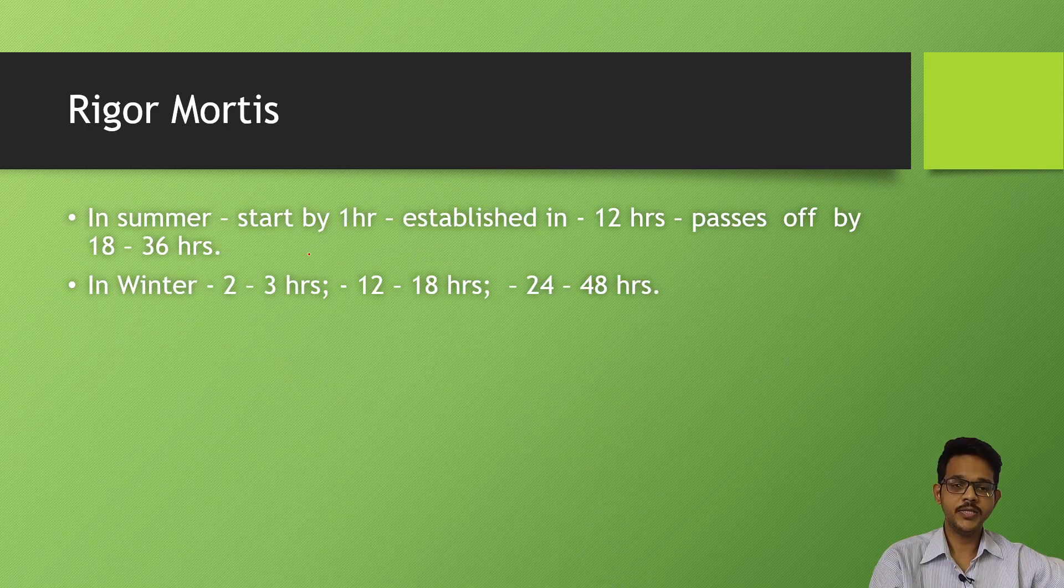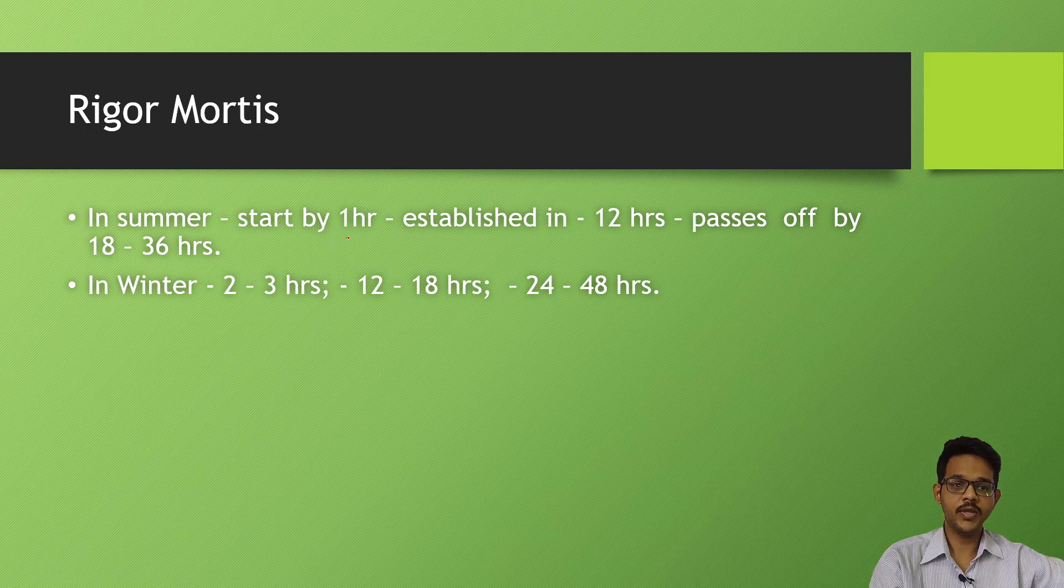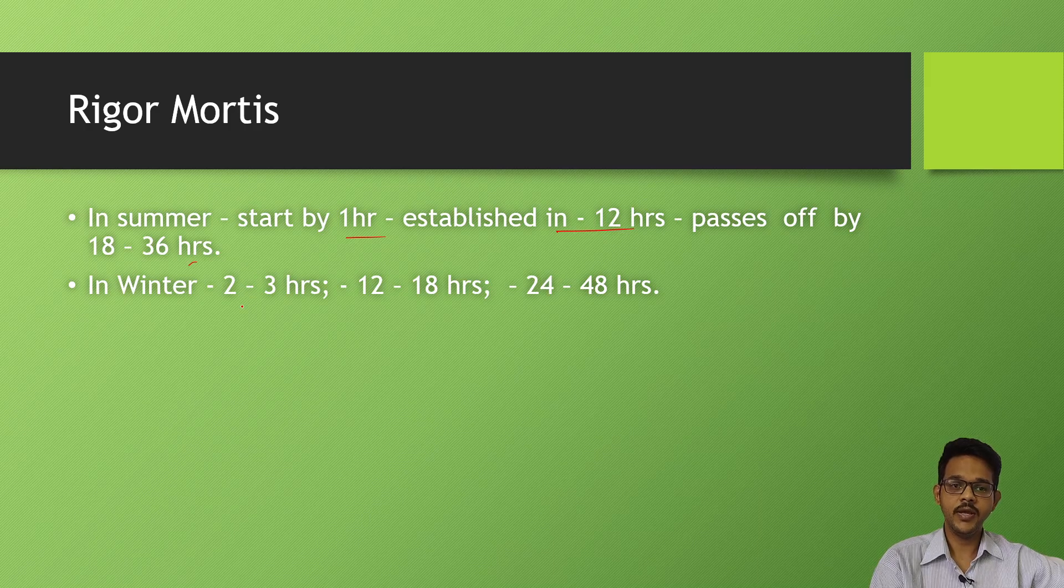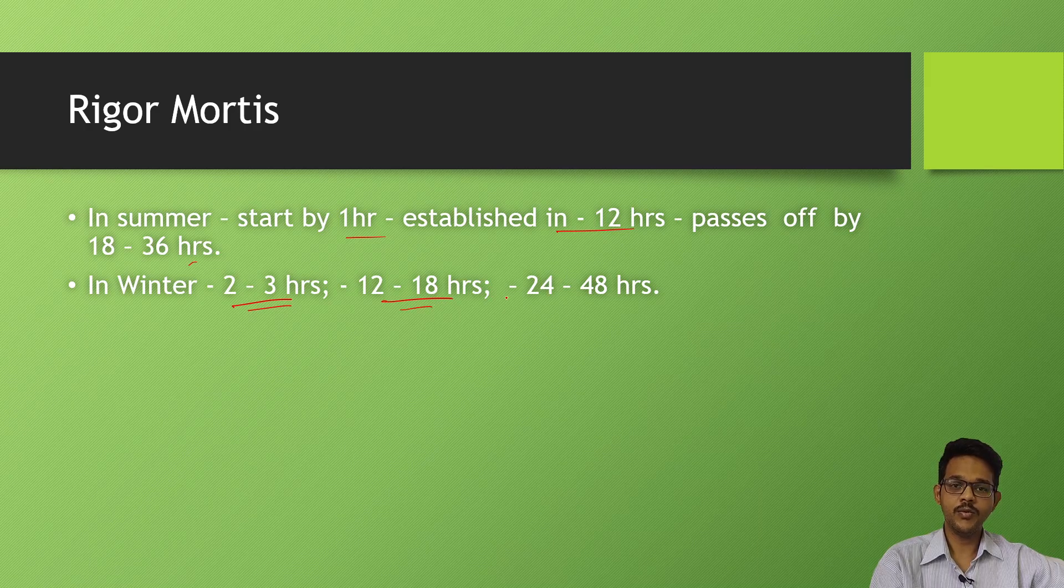Based on temperature, rigor mortis may change. In summer, it starts by one hour, established in 12 hours, and passed off by 18 to 36 hours. In winter, it starts in 2 to 3 hours - it is delayed. Remains for 12 to 18 hours and passes by 24 to 48 hours.